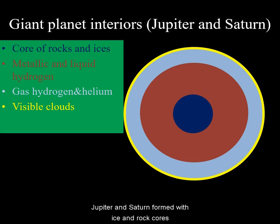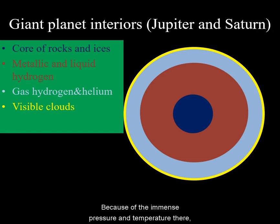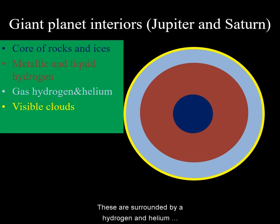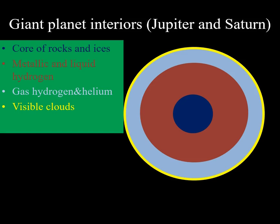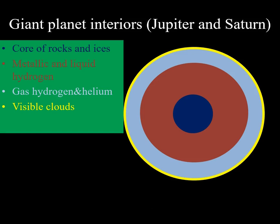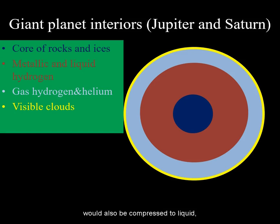Jupiter and Saturn formed with ice and rock cores of about 10 Earth masses. Because of the immense pressure and temperature there, these may currently be in molten form. These cores are surrounded by a hydrogen and helium envelope that makes up most of the mass of these planets. Because of similar pressure and temperature considerations, much of the hydrogen envelope would also be compressed to liquid or even metallic form.